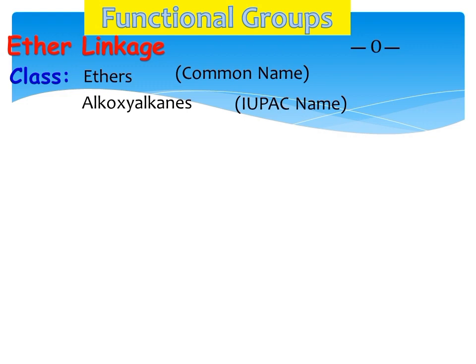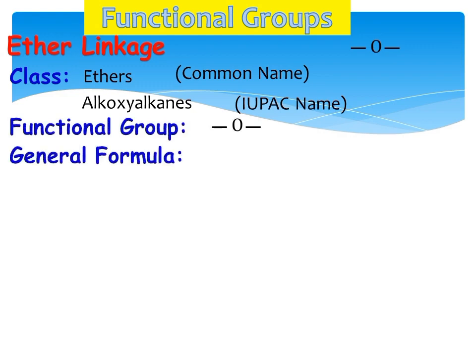For the IUPAC name, you have to replace 'alkane' with 'alkoxyalkane,' where the 'oxy' represents the presence of oxygen within the chain. As far as the functional group is concerned, you can see that oxygen is in the center with two valences on both sides.